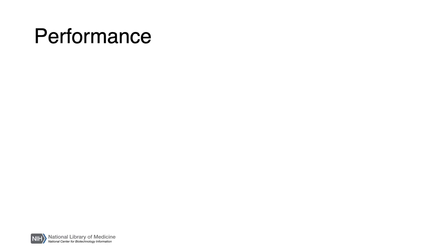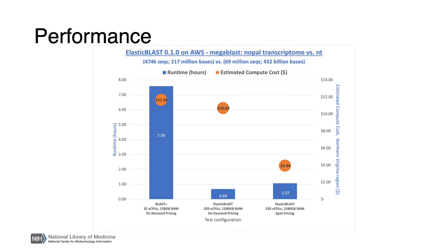Now I'd like to show you an example of Elastic Blast performance. In this example, MegaBLAST with default parameters was used to align the nopal transcriptome described earlier against the NT BLAST database. This comprises 474,000 queries totaling 217 million bases versus 69 million sequences in NT, which contains about 432 billion bases. This BLAST search is too large to run on the NCBI web BLAST service. As shown in the first column, running BLAST+ on a single server with 32 virtual CPUs and 118 GB of RAM will take about 7.5 hours to complete and cost about $11, whereas Elastic Blast on 10 times as many virtual CPUs will take about 40 minutes and cost about $10. This assumes on-demand pricing at AWS.